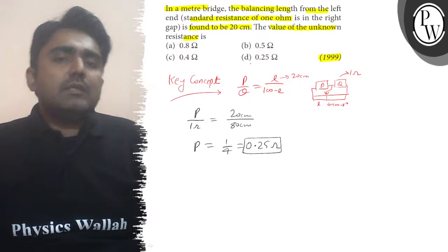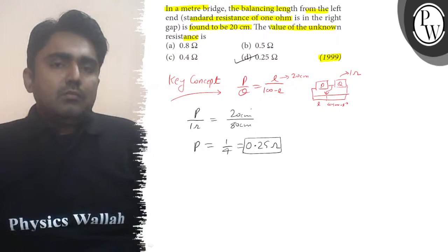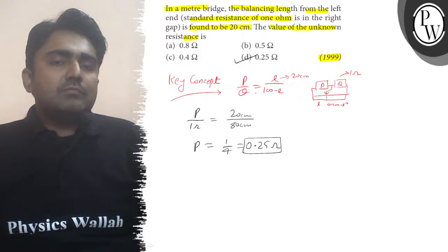This unknown resistance will be option D. Hope you understand it well. Best of luck.